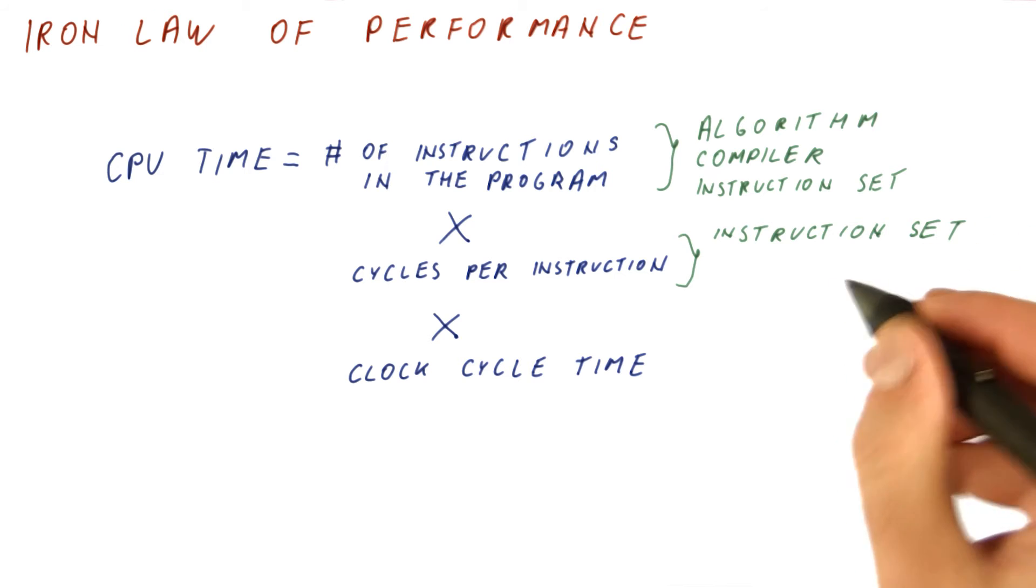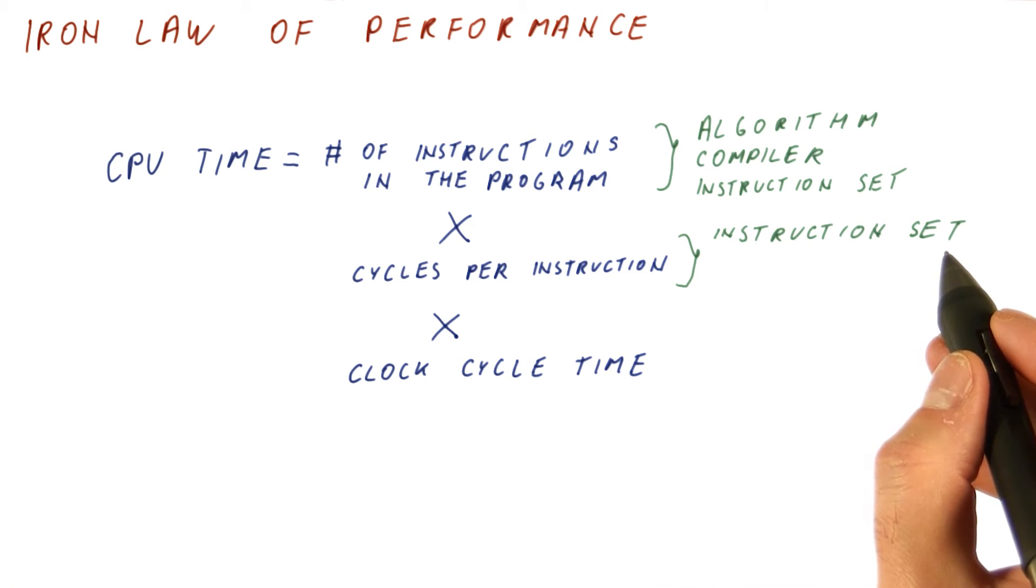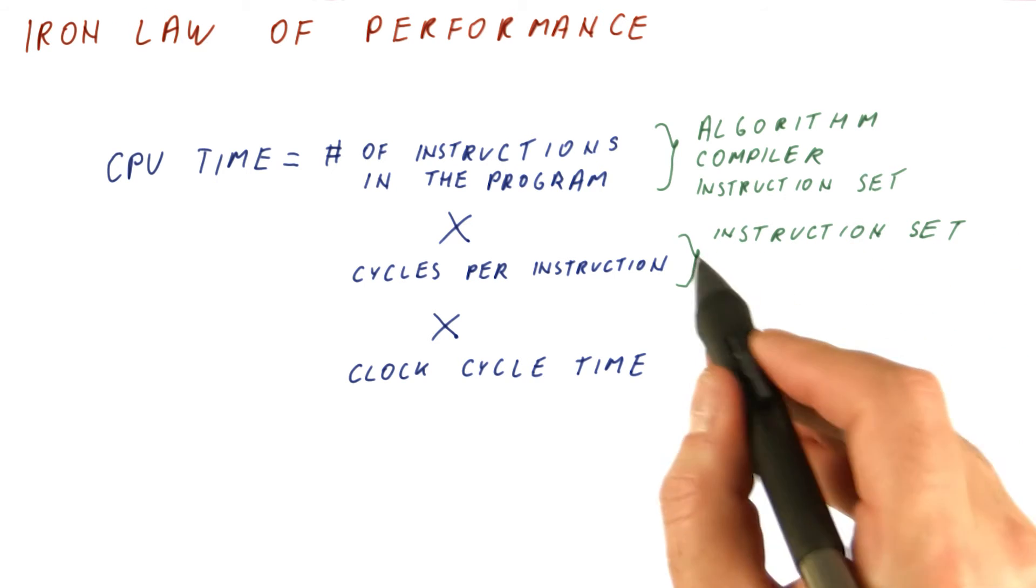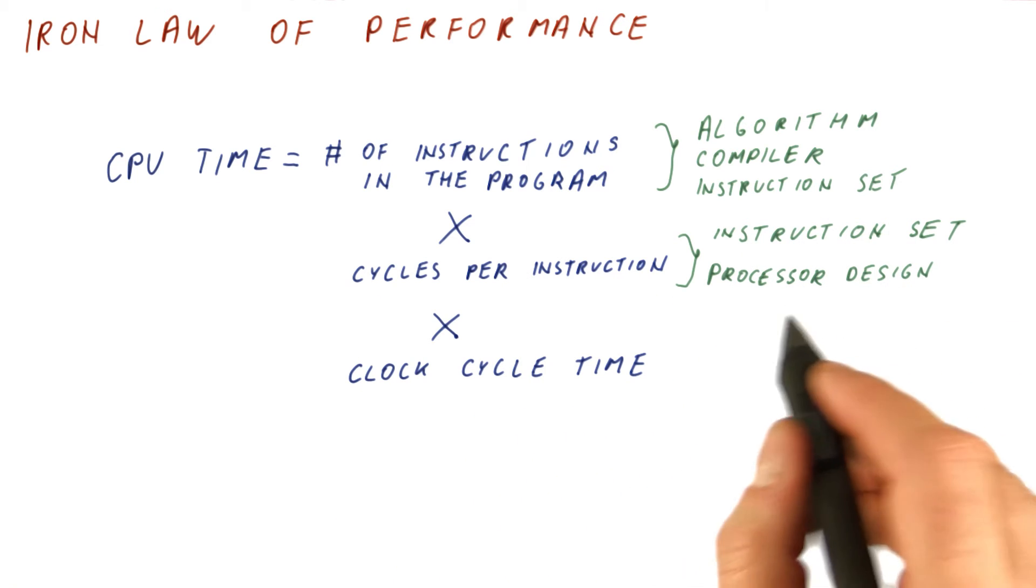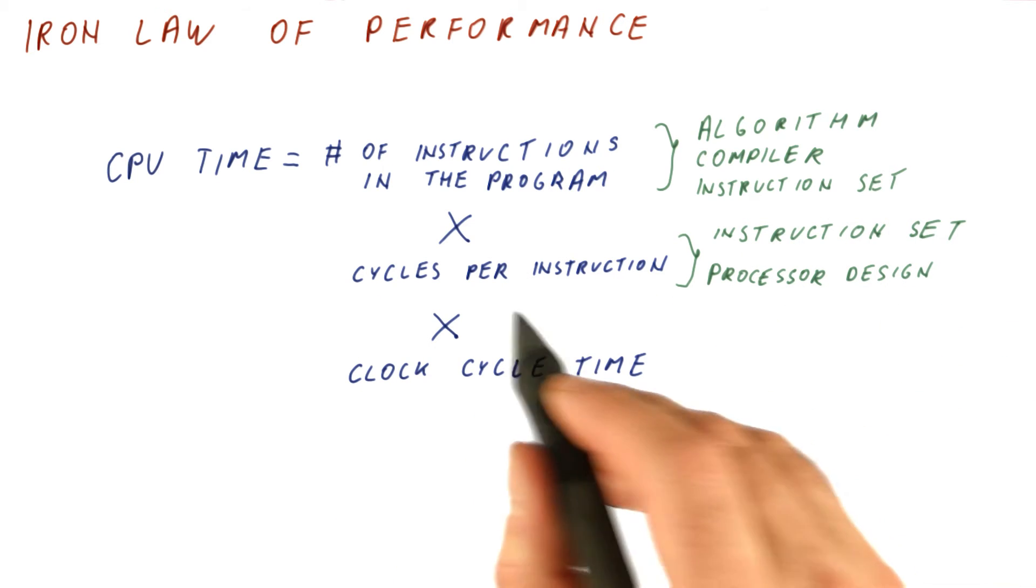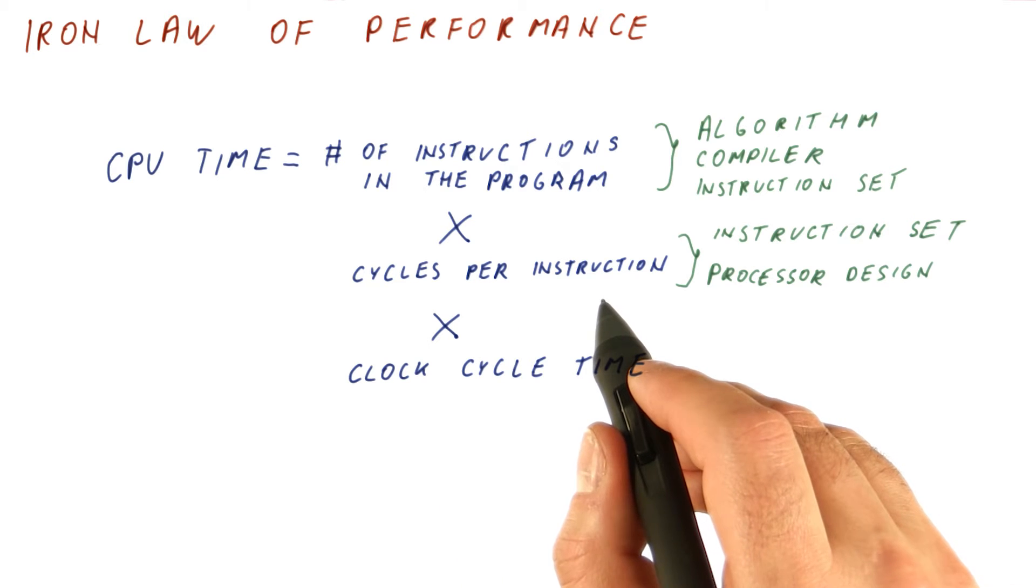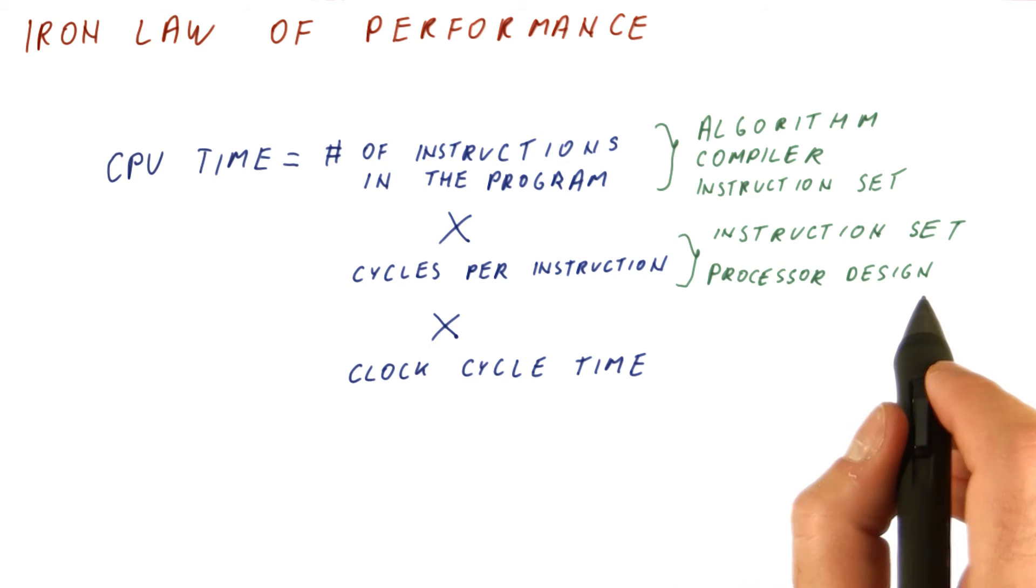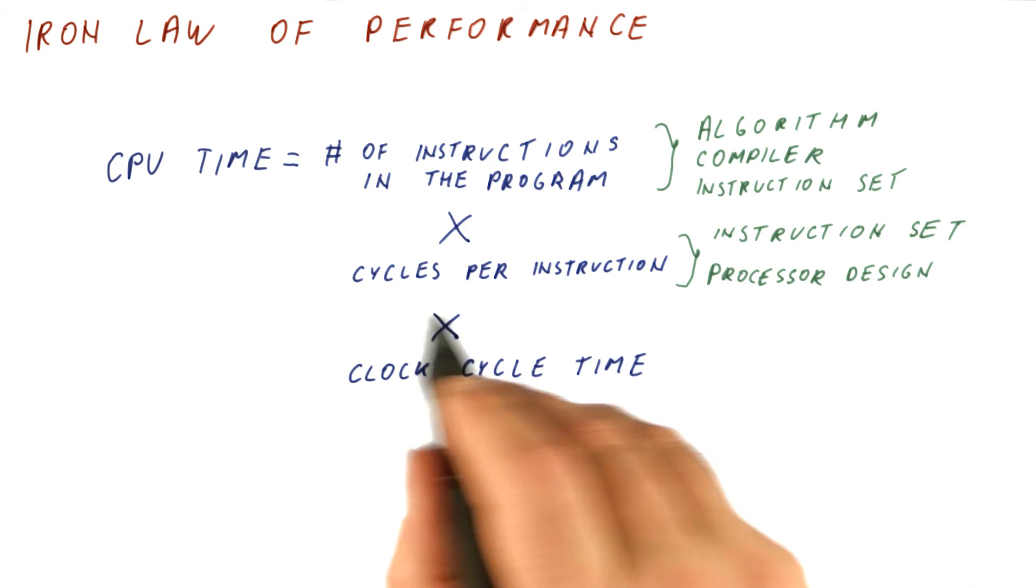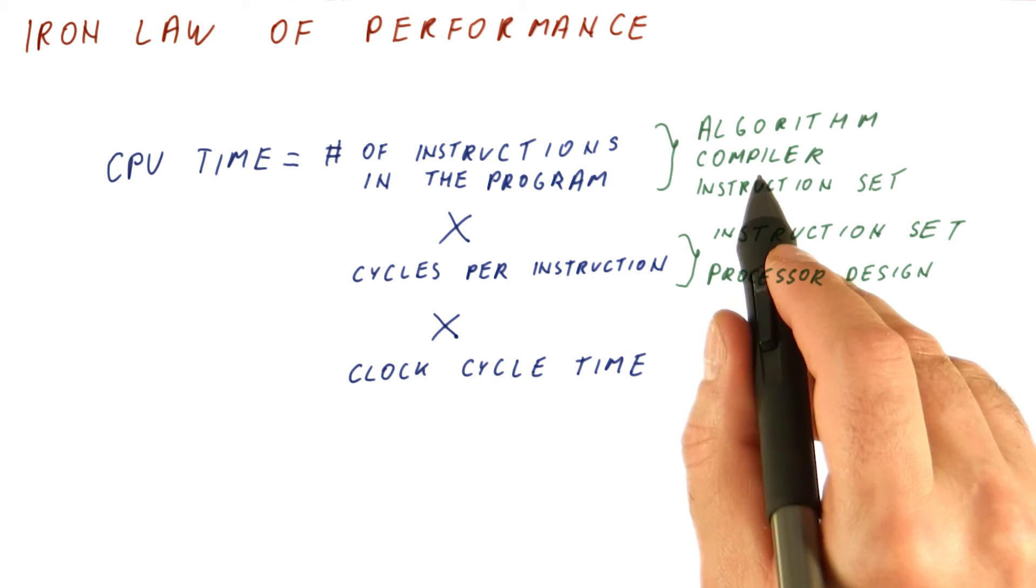The number of cycles per instruction is also affected by the instruction set. This time, the simpler instructions might take fewer cycles to do. But also, our processor design can affect how many cycles we need per instruction. We will see several techniques that allow a processor design to spend fewer cycles per instruction without changing the instruction set.